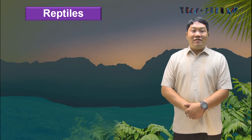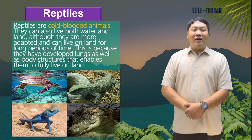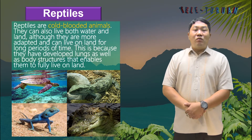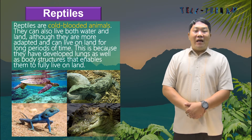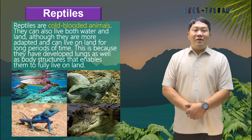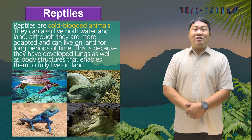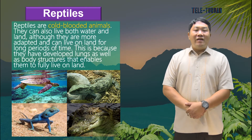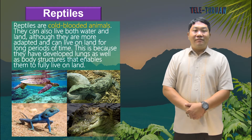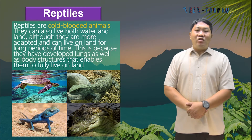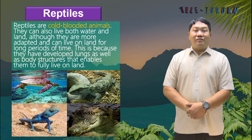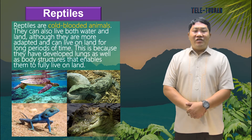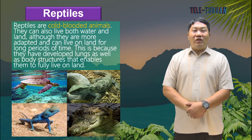Next are reptiles. Reptiles are cold-blooded animals. They can also live in both water and land, although they are more adapted and can live on land for a long period of time. This is because they have developed lungs as well as body structures that enable them to fully live on land. A reptile's body is covered with dry skin and hard scales. These prevent the loss of water from the body through evaporation. Their eggs have leathery shells which make them adapted for developing on land.